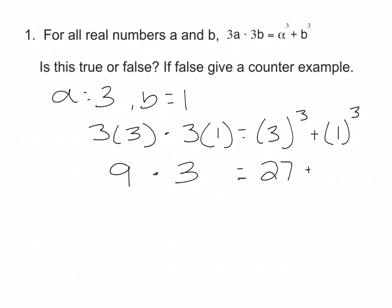3 to the third is 3 times 3 times 3, so that's 27, plus 1 to the third power. Well, 1 times 1 times 1 is 1. So if I do the left side, 9 times 3 is 27, equals 27 plus 1, that's 28.